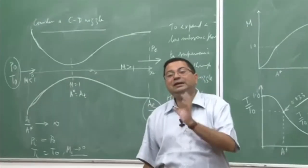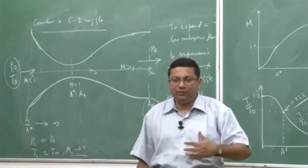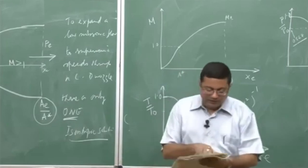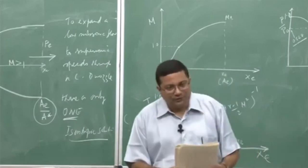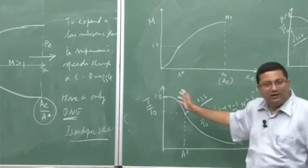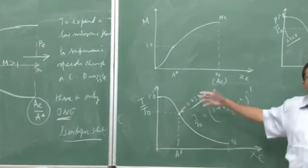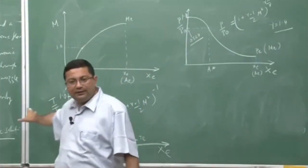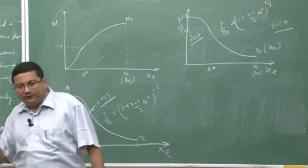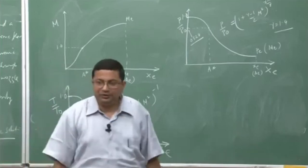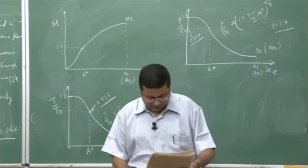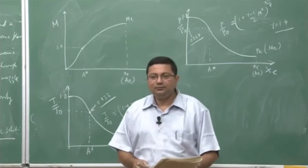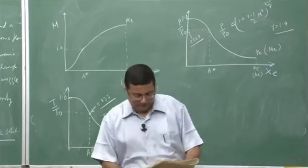We have shown previously that thrust is maximum for the ideally expanded case. Now we see the physical meaning of these types of flows. In the next class, we will start from there, try to establish the flow, and discuss various consequences of the back pressure — under what conditions we get each case. I will stop here. Thank you.